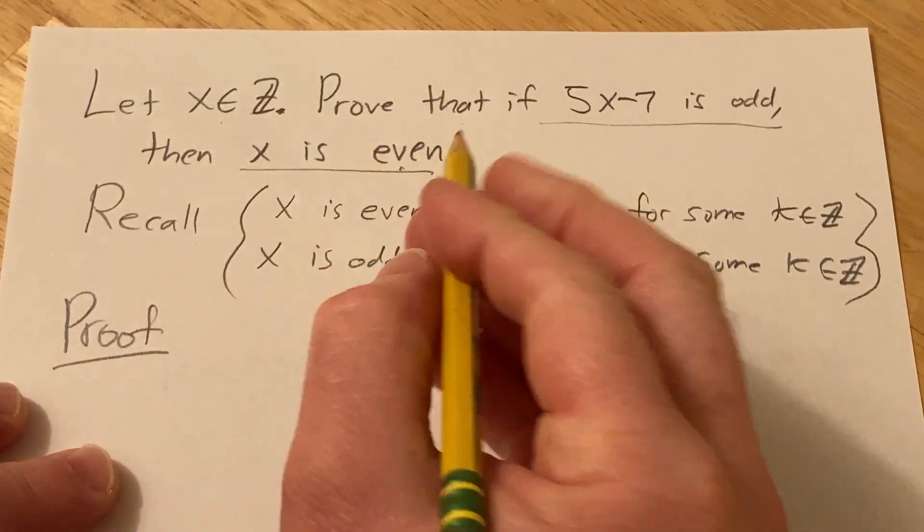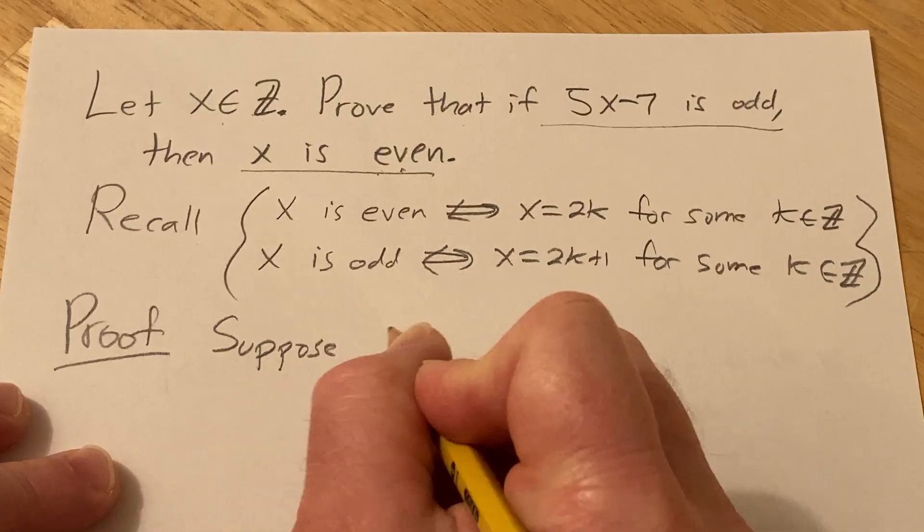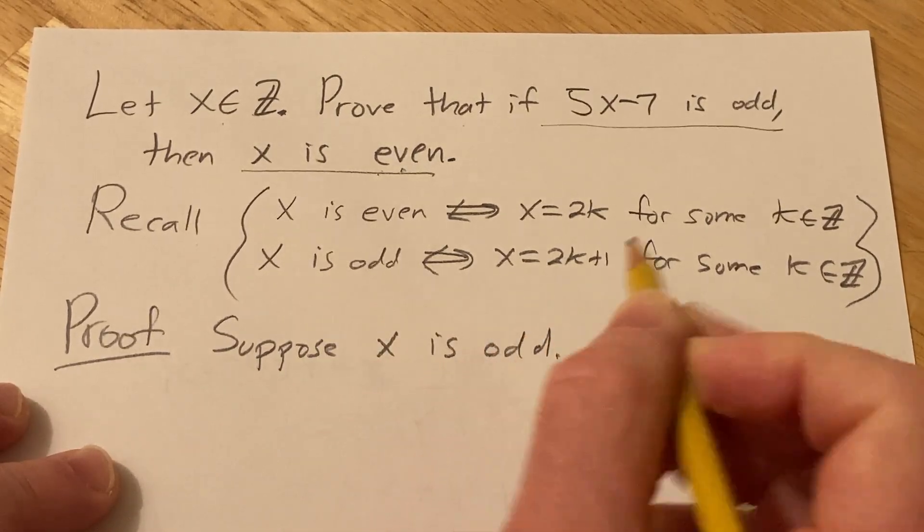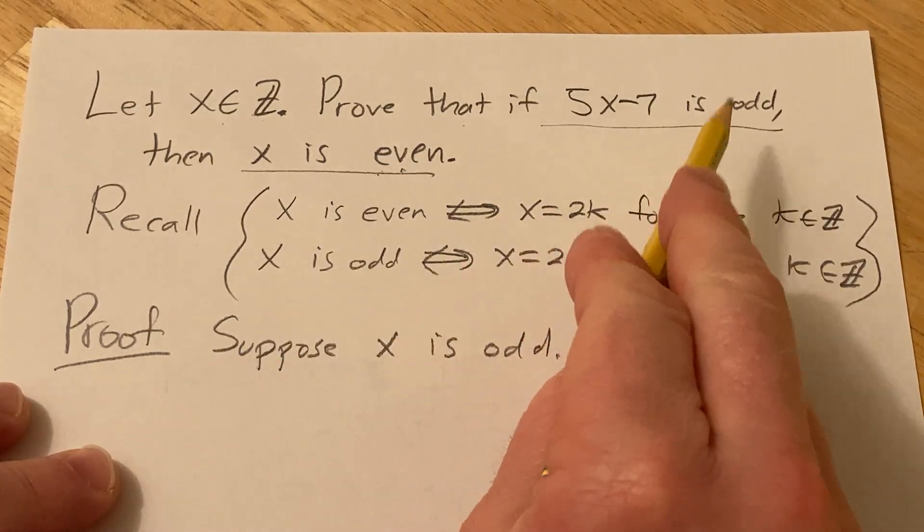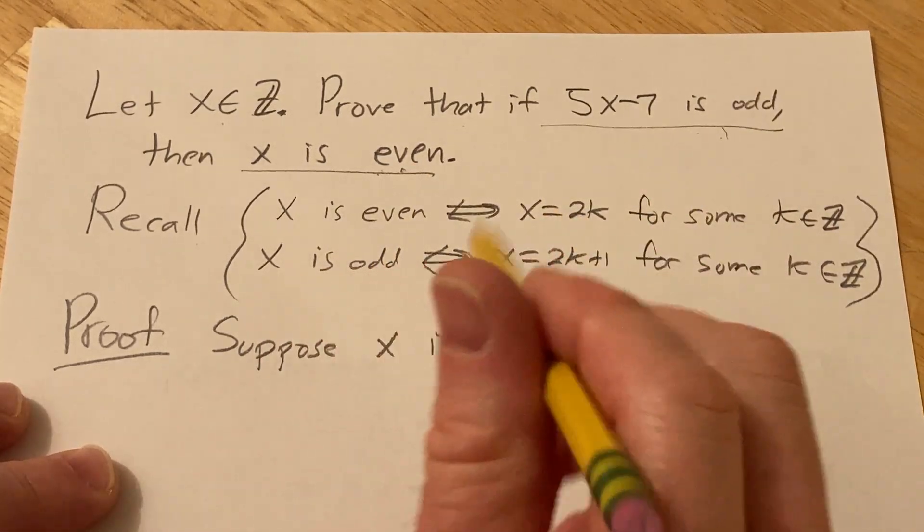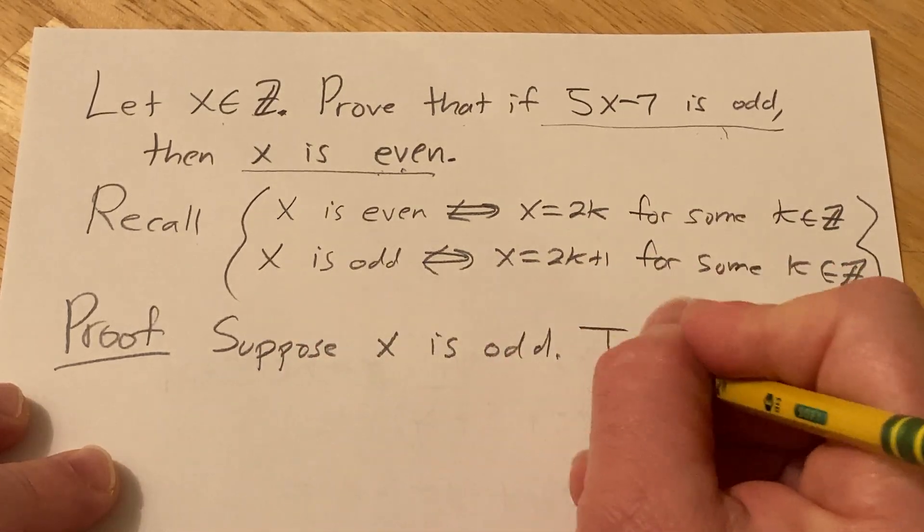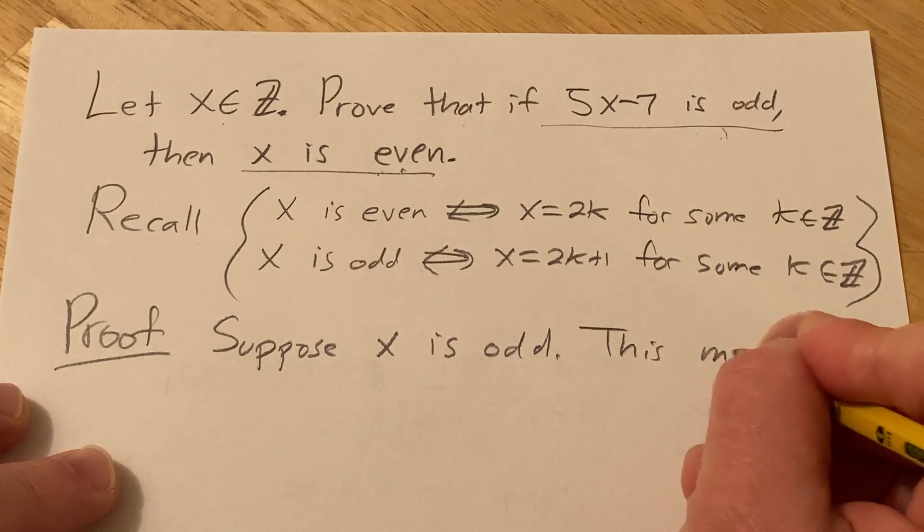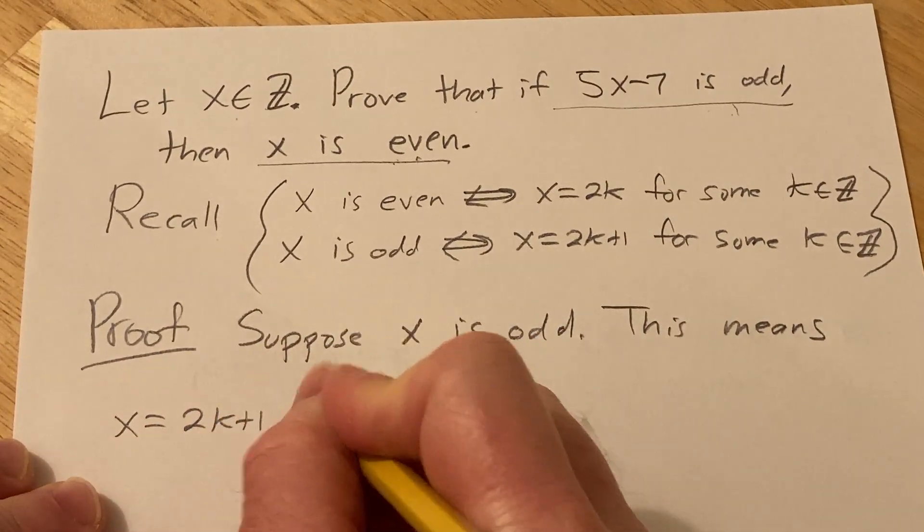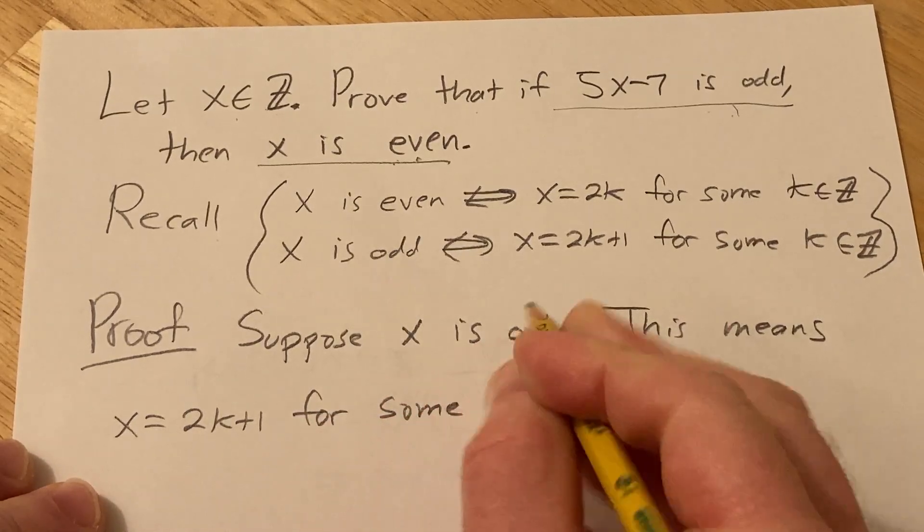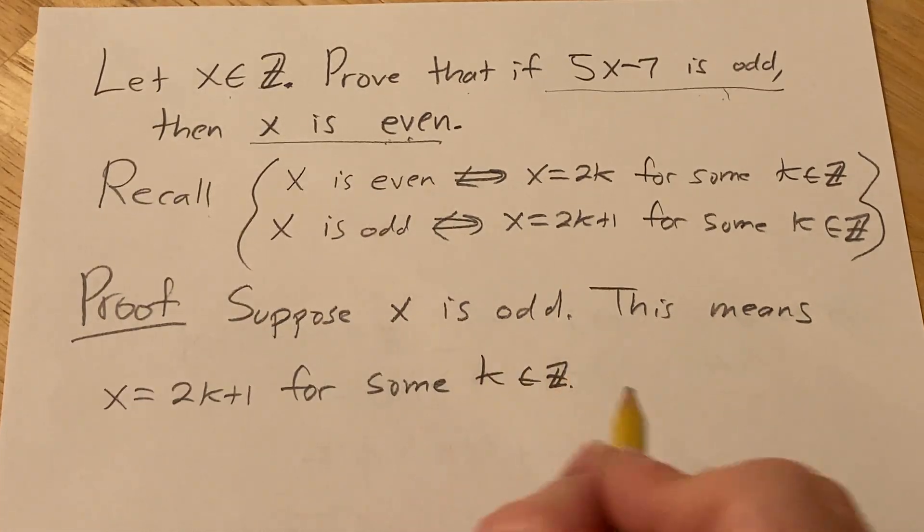So we're going to prove the contrapositive. So we'll suppose that x is odd. Suppose x is odd. And we have to show that this is even, so it's the opposite. So that's our goal, to show that this is even. It's called contrapositive, proof by contrapositive. So because it's odd, we know something. We know this is true. So let me write that down. So this means x equals 2k plus 1 for some k in Z. That's what it means for x to be odd.